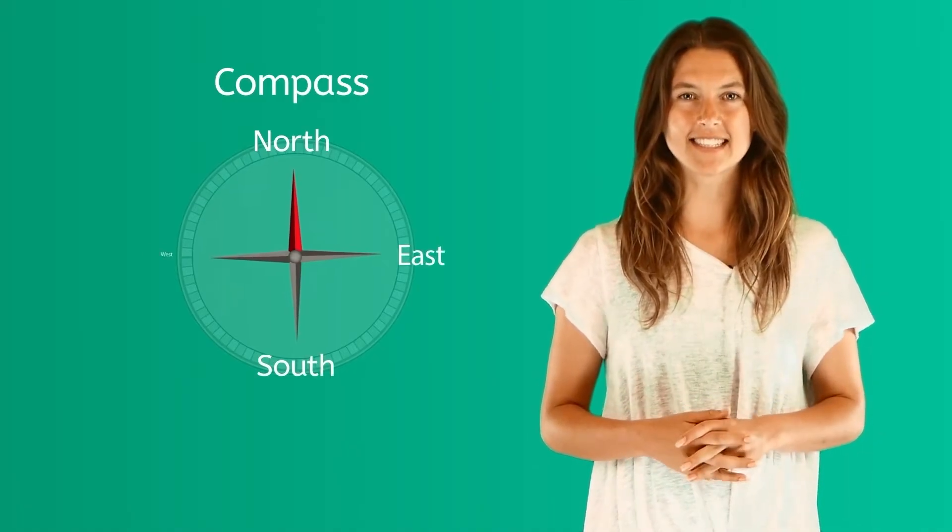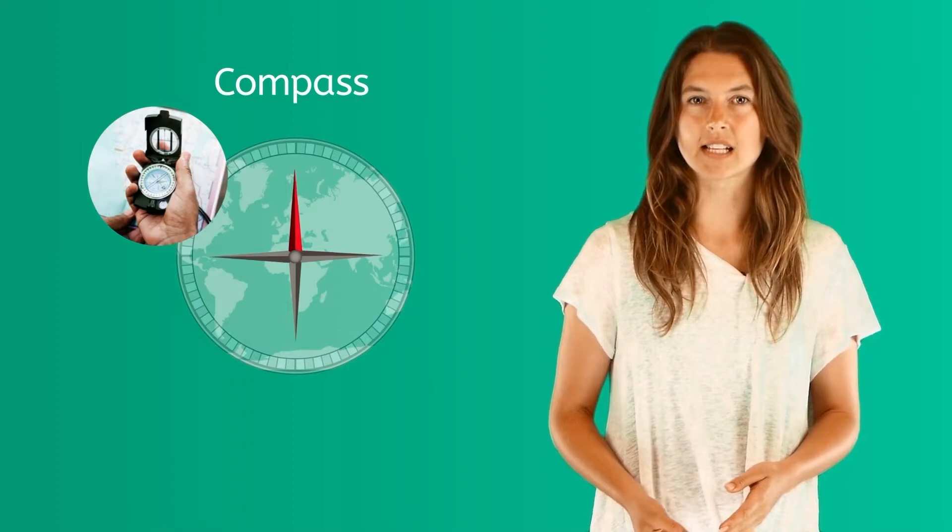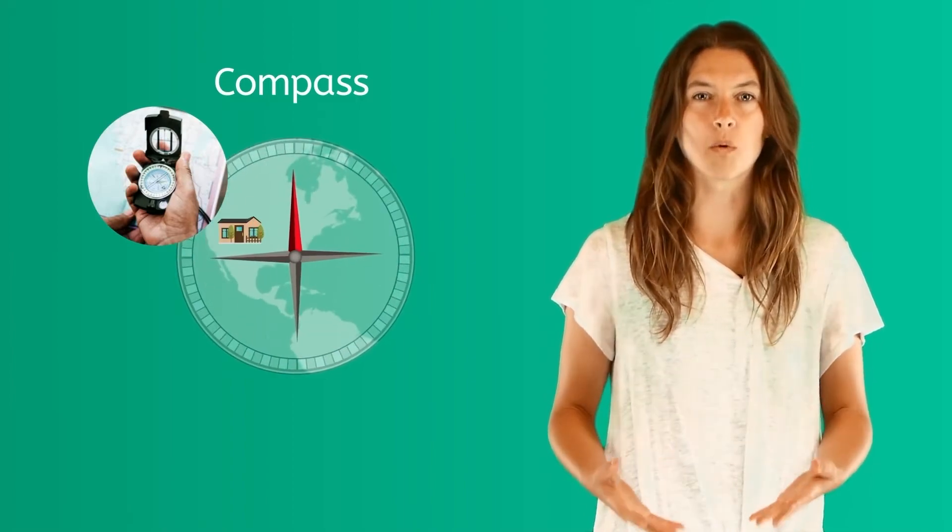To talk about the location of continents, countries, and oceans in our world, we can use the four points of a compass: North, South, East, and West. A compass is a tool that tells the direction of things like where your home is found in our world.